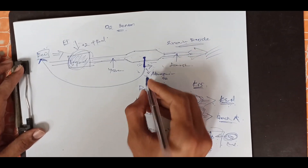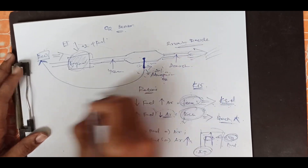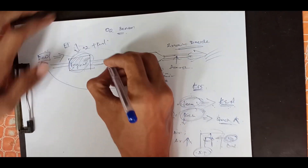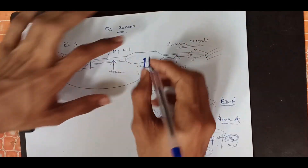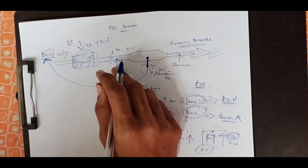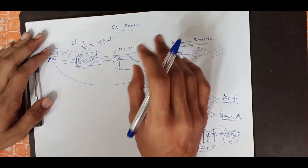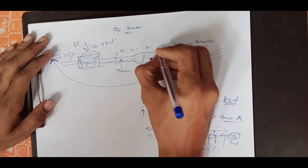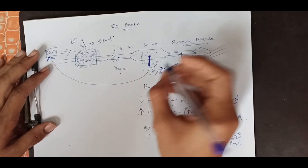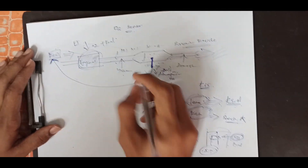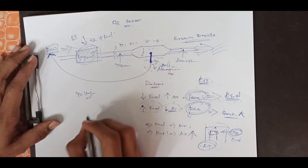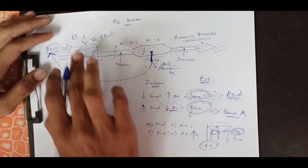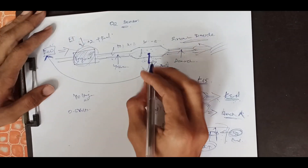For example, the combustion happens in the engine. This is the amount of O2 in the combustion of the engine. Now, 20% oxygen is present in the atmosphere. If you have a combustion engine, the oxygen level will come down — it will decrease to around 10% or 8%. That means the voltage signal changes. The O2 sensor outputs 0.5 volts as a reference point. The engine ECU reads this 0.5-volt signal.